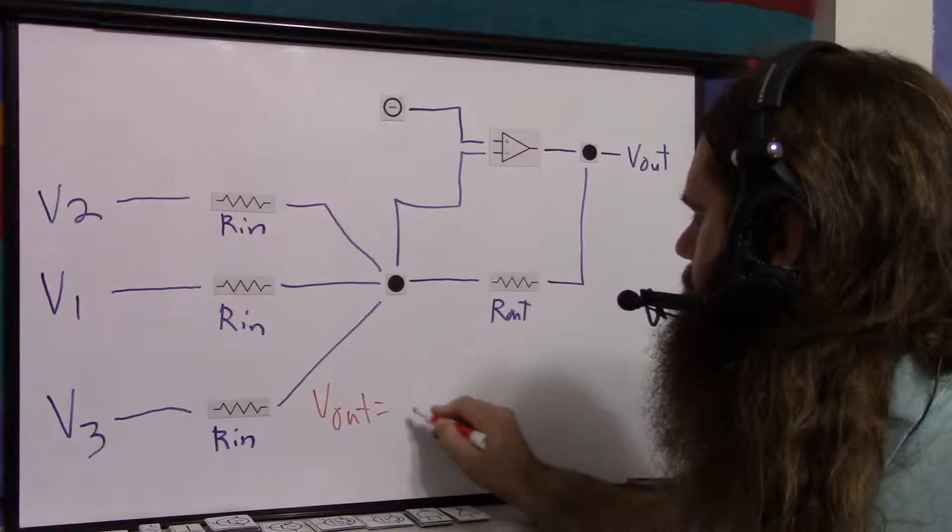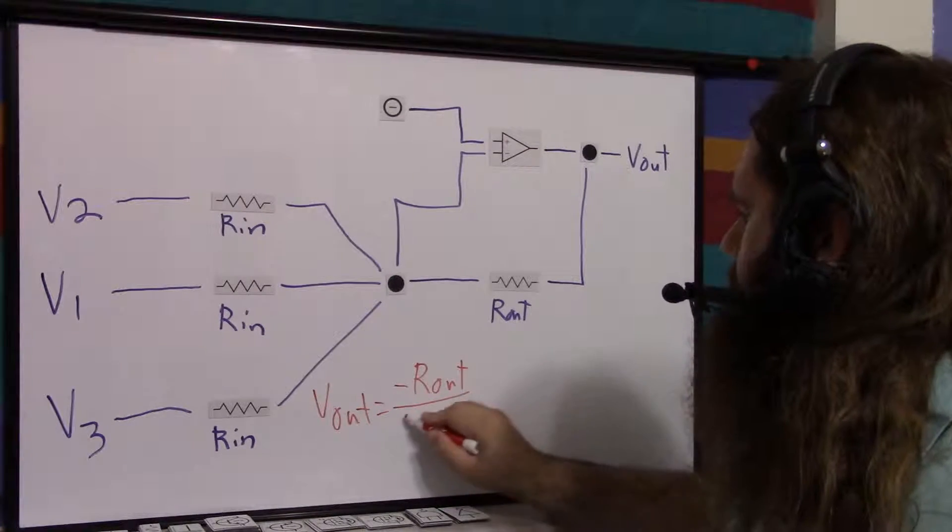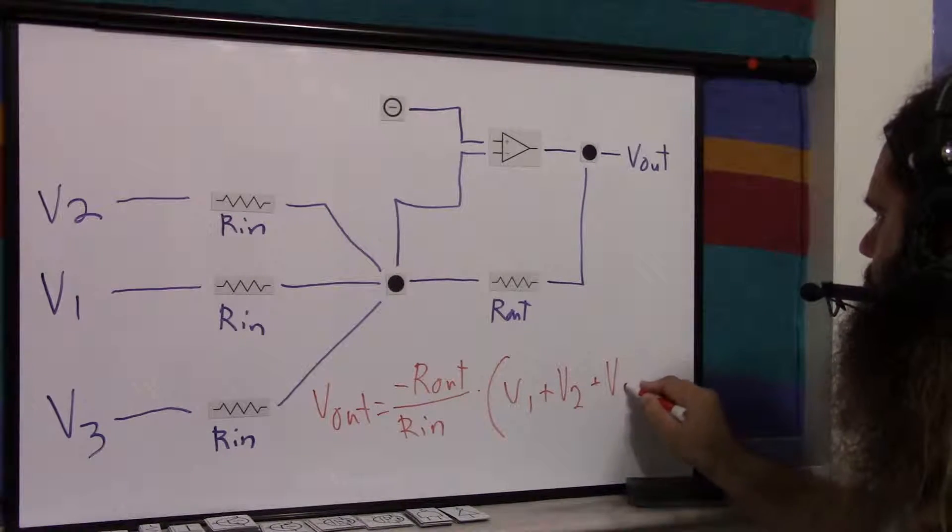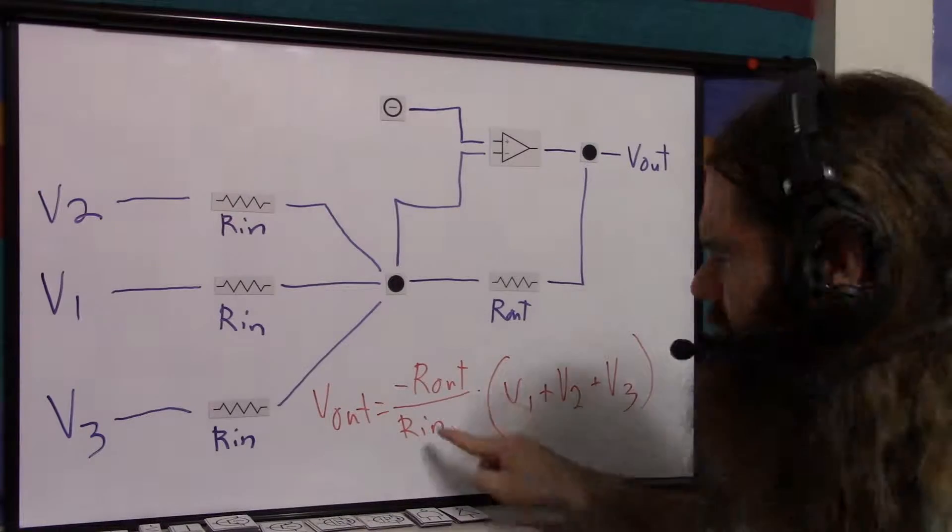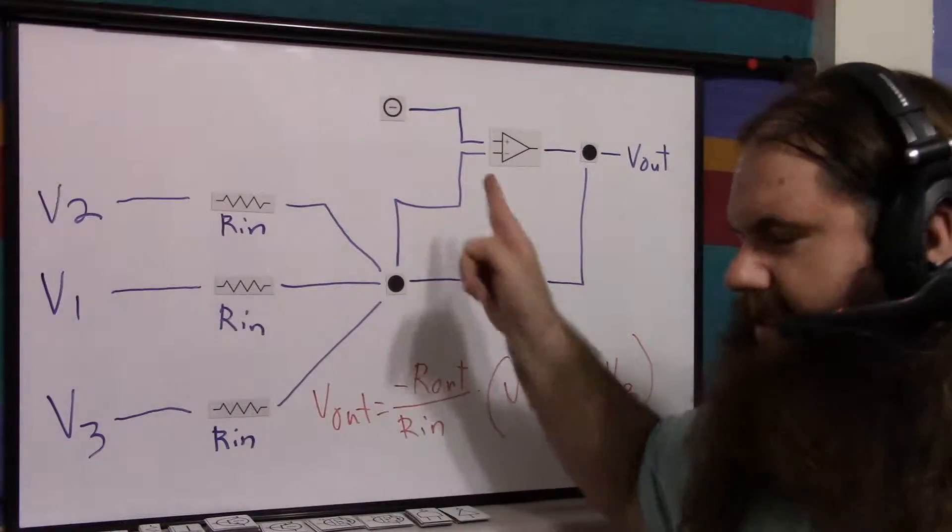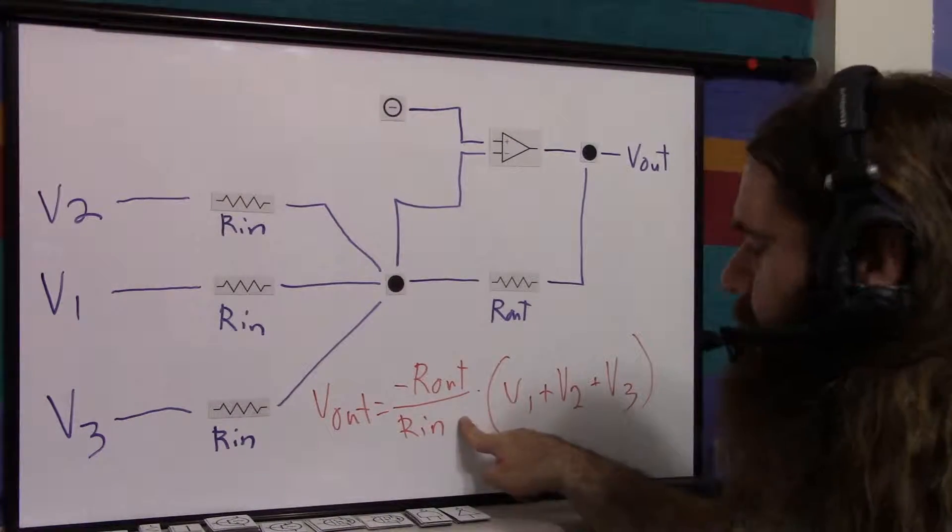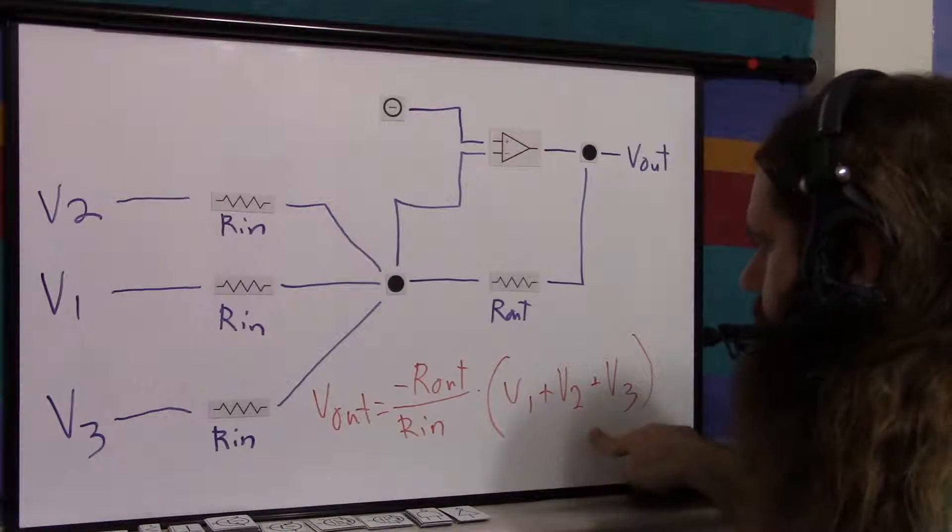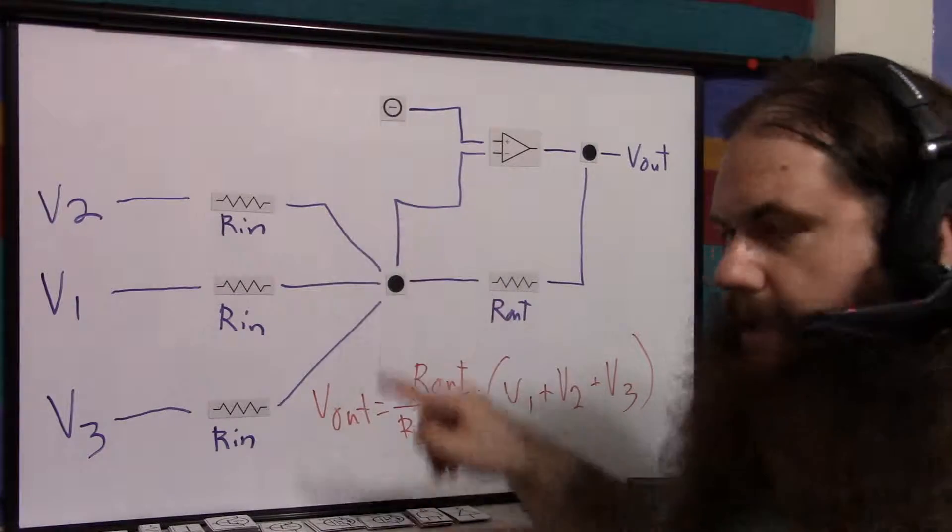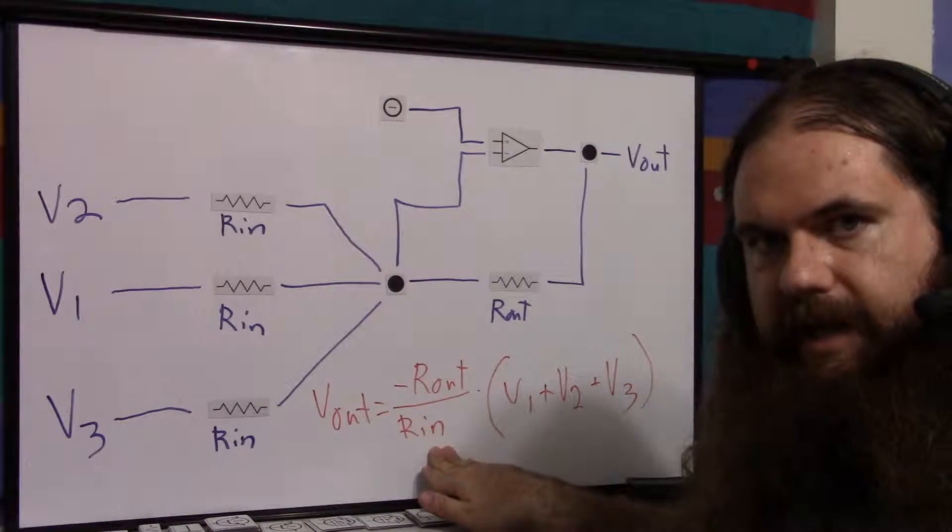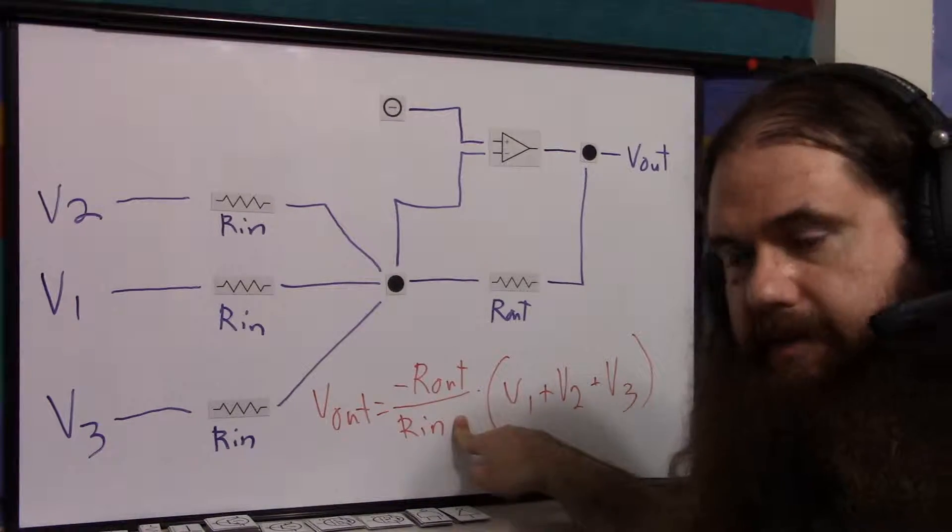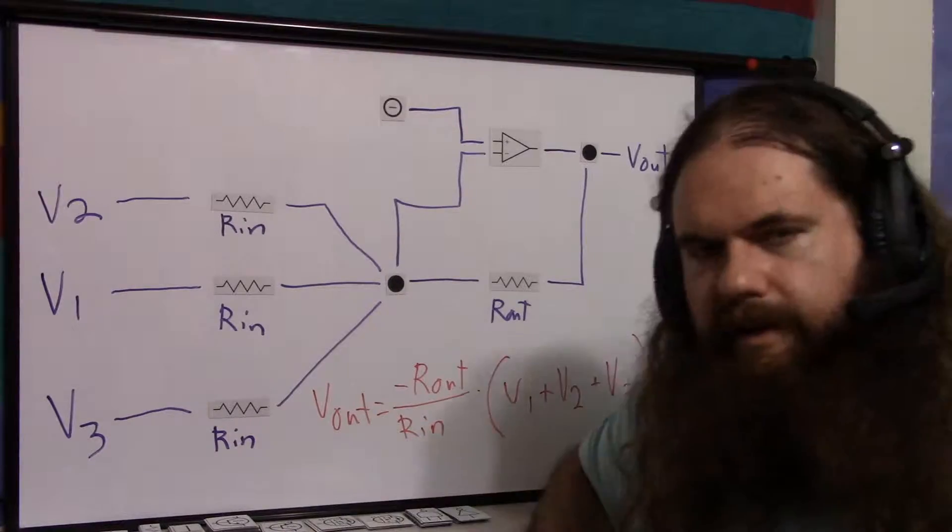But let me show you what the formula actually is. For the three-input version, V out equals minus R out divided by R in times V1 plus V2 plus V3. This should look familiar to you. If we just look at this minus R out over R in, that is the gain of the single input inverting amplifier. We're multiplying that gain into the sum of the voltages to get the voltage out. So the same gain for the single input version is behaving as if it's the gain here. Essentially, you have the same thing. You have the sum of the voltages times that, which we could consider the gain, equals V out.